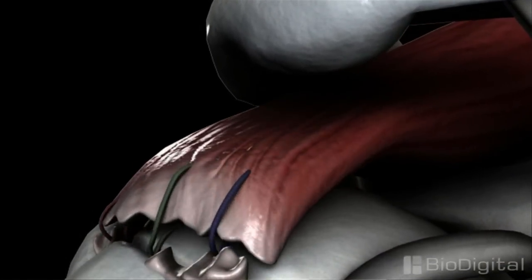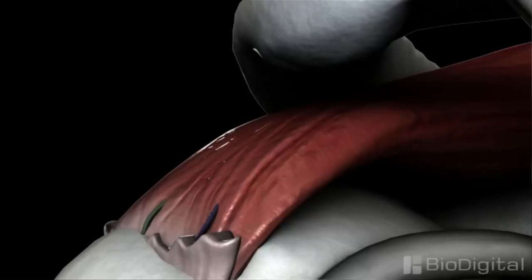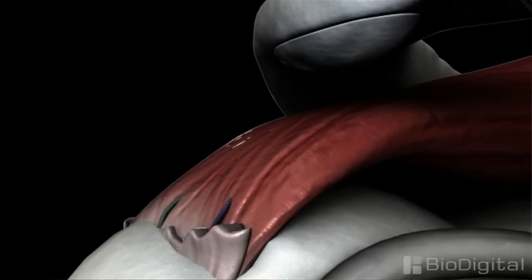Suture anchors work like a drywall anchor works in your wall to hold a picture. It gets buried down deep inside the bone and has strong suture attached to it. And then we route that suture through the torn edge of the rotator cuff and then sew it back down anatomically where it used to be.